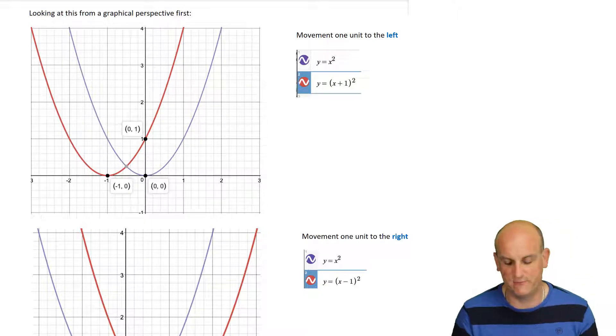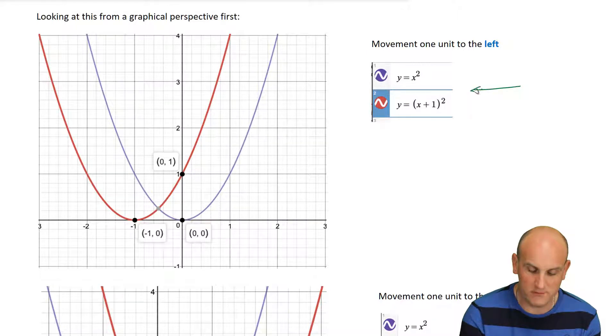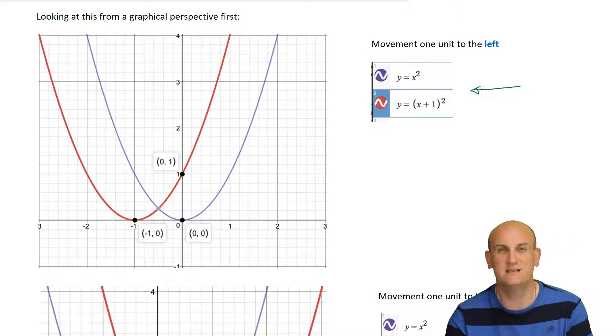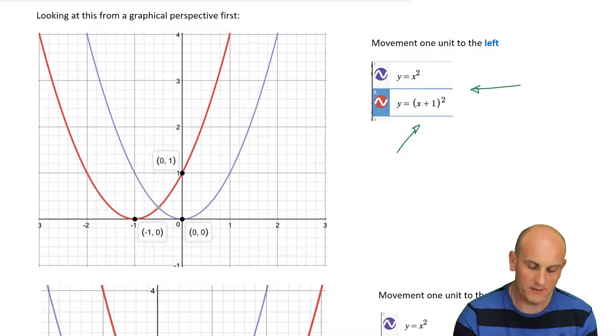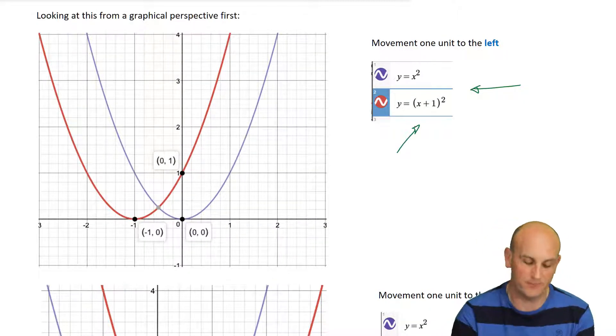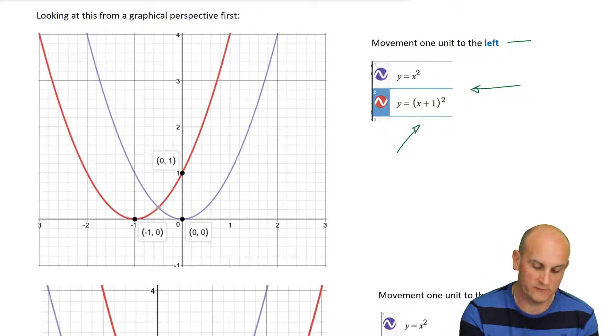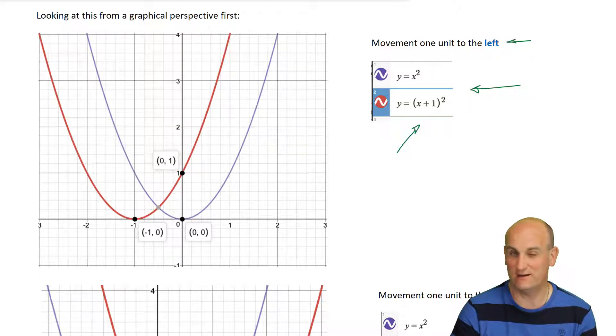So, looking at this from a graphical perspective first, I've used Desmos.com. Great graph drawing software, by the way. And long story short, here are my two graphs. The blue one is my y equals x squared. And all I'm going to do is translate it. I'm going to move it. And so, I've put into my equation y equals x plus 1 all squared. So, the plus 1. And what has that plus 1 done? It has actually moved it one unit to the left. Now, I always think of that as counterintuitive. Plus 1, you always think, would actually move to the right. And in fact, it doesn't. In this situation, if you put a plus 1 inside that set of brackets, it moves one place to the left. Really, really important to notice.